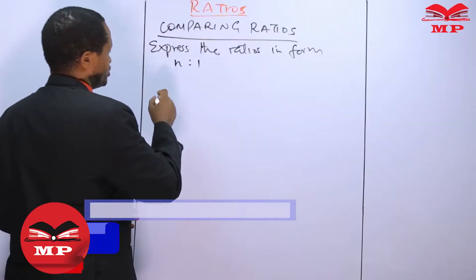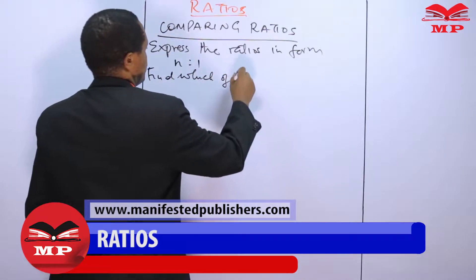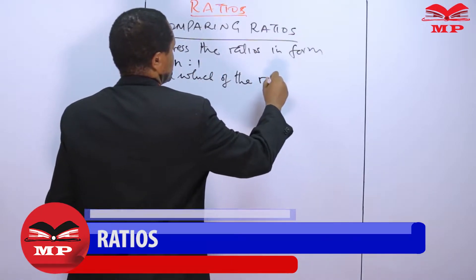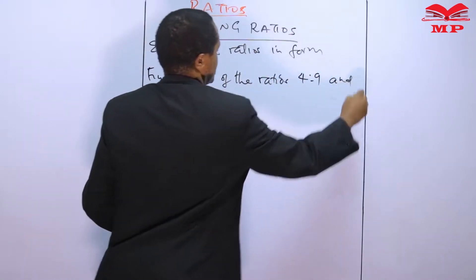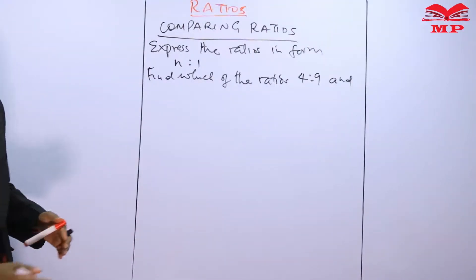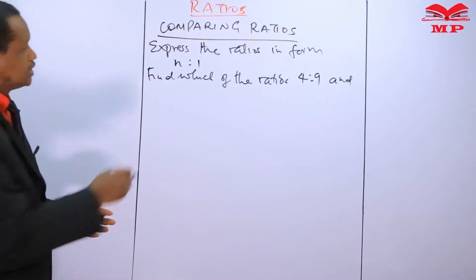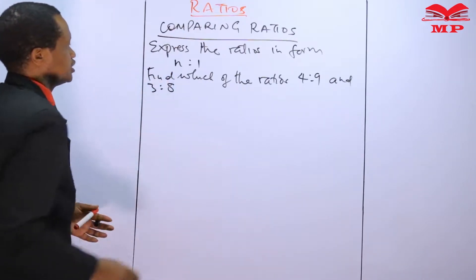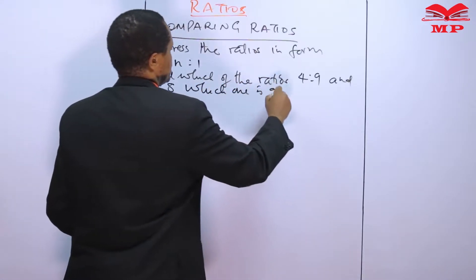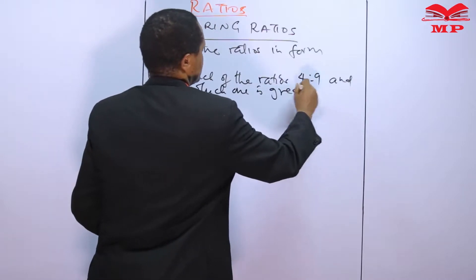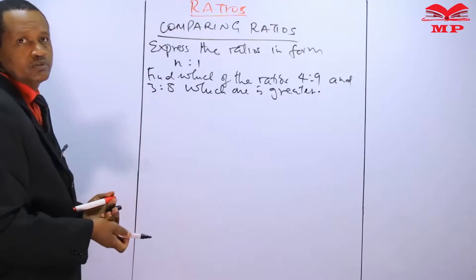Which of the ratios four to nine and three to eight is greater? Between these two ratios, which one is greater?